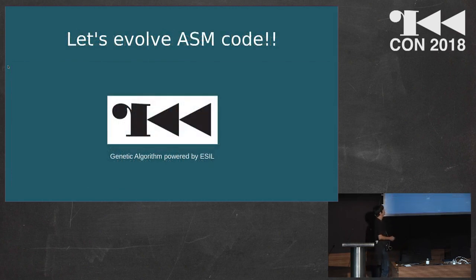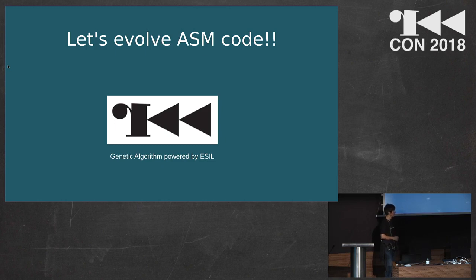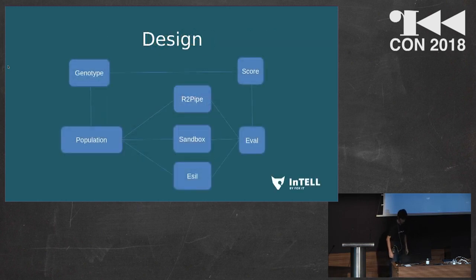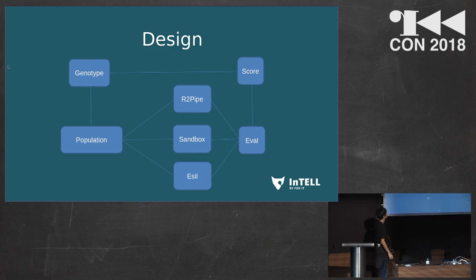I decided to port to Radare the static evaluations and the code display. It's also possible to evolve compiled code. This can be designed in many different ways. In this case, the genotype holds the binary code. The population is a group of genotypes, and the genotype is sent to the sandbox.